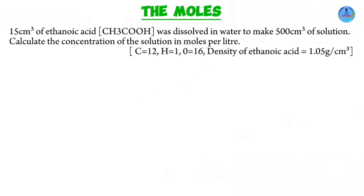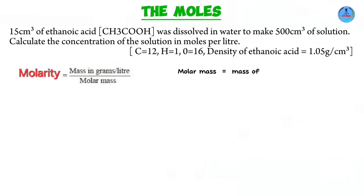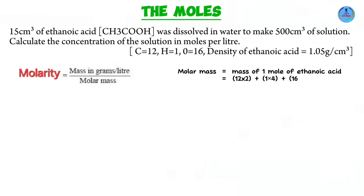If we want to find molarity, we can use this formula because mass can be calculated and molar mass is easy given the formula and relative atomic masses. Let's start with the molar mass — the mass of one mole of ethanoic acid. We total the sum of the RAMs: two carbon atoms, four hydrogen atoms, and two oxygen atoms. So RAM of carbon is 12 by 2, hydrogen is 1 by 4, and oxygen is 16 by 2. Summing these gives a molar mass of 60 grams.